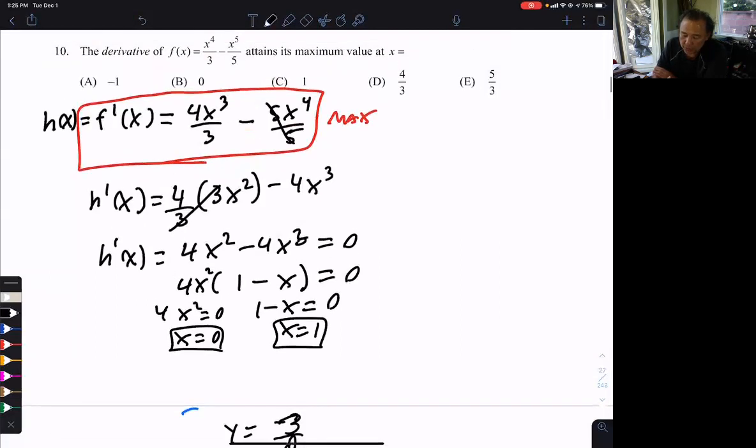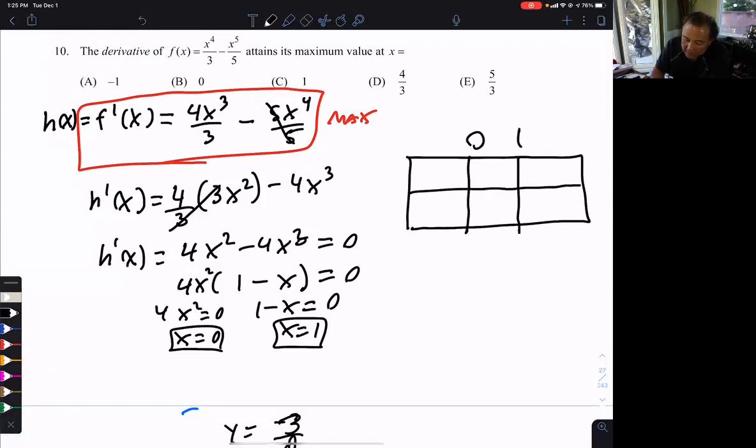So those are my two possible places where the maximum can occur. Now, this is confusing me a bit. Here's what we're going to do. We're going to do a chart and get an idea of what's happening. Because normally we need endpoints and critical points. We test them, but we don't have that. So let's take a look at what this graph is doing, and it'll probably make more sense.